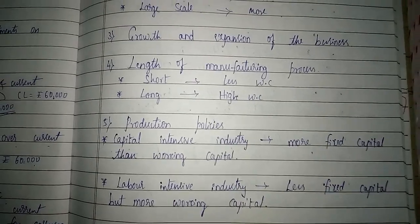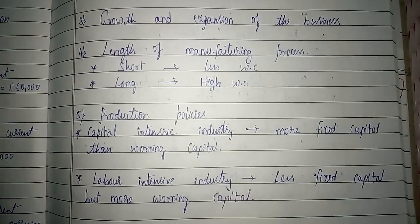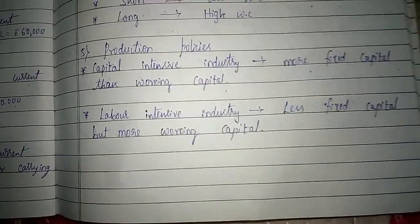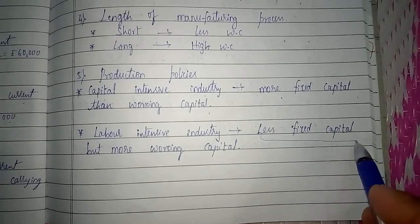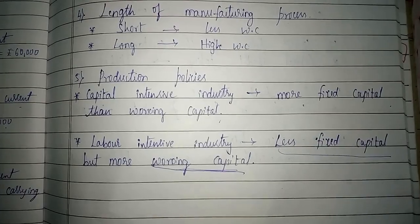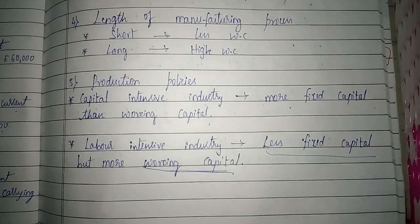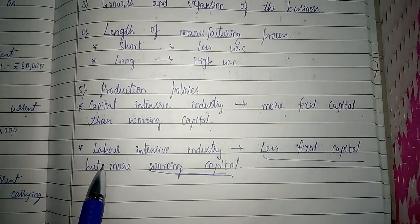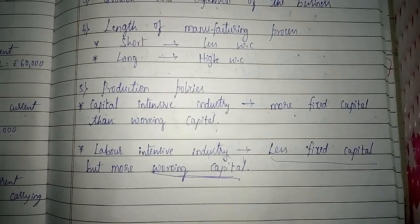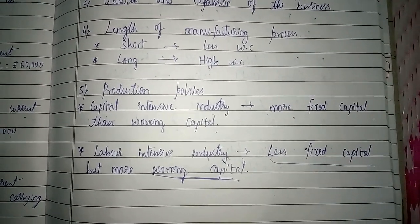The fifth factor is production policies. A capital-intensive industry needs to invest more in fixed assets and machinery, requiring more fixed capital than working capital. A labor-intensive industry requires less fixed capital but more working capital. Capital-intensive industries perform manufacturing with automation and machinery, while labor-intensive industries use more labor — so they require more working capital to meet labor costs.